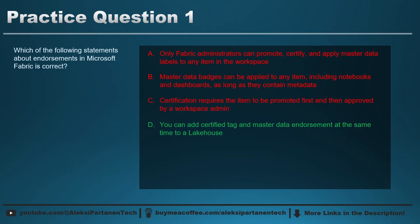The correct answer is D — you can add a certified tag and master data endorsement at the same time to a lakehouse. This is a tricky question because we are talking about a certified tag, not a certified endorsement. If it were a certified endorsement, you could not add it at the same time as master data endorsement because only one endorsement can be active for a given item at a time. But since we're talking about a tag called 'certified,' we can add that at the same time as the master data endorsement. A is incorrect because the Fabric administrator role is not required for promotions. B is incorrect because master data can only be applied to data stores, not arbitrary items even if they contain metadata. C is incorrect because certification does not require the item to be promoted first.